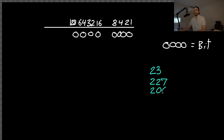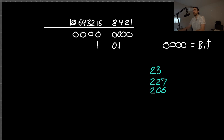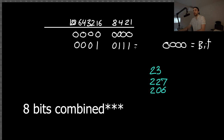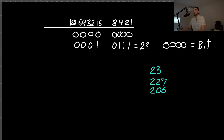Let's use 23, 227, and 206. For 23: we start at the highest column weight below 23, which is 16. 16 plus 8 is 24 — too high. So instead: 16 plus 4 is 20, plus 2 is 22, plus 1 is 23. So 23 in binary is 0001 0111 — combining those bits gives us 23.